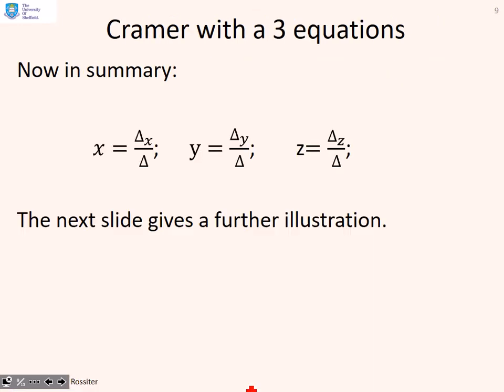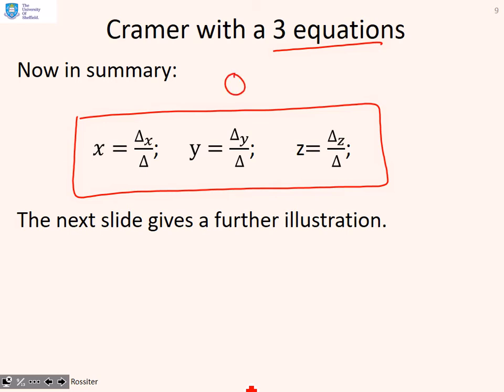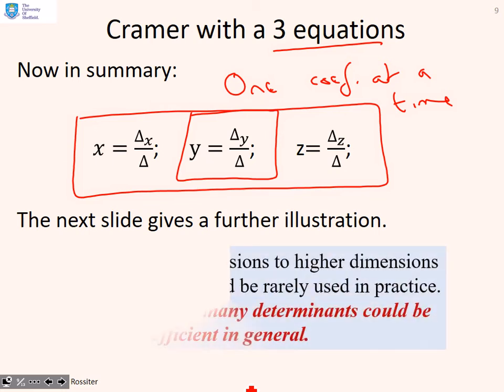In summary, if you have three equations, then x is delta_x over delta, y is delta_y over delta, z is delta_z over delta. The key point to notice is you can solve for one coefficient at a time. If you only wanted y, all you need to do is calculate delta and delta_y. So that's just two determinants, and we know we can solve determinants fairly efficiently. This is where Cramer's rule can be very useful. If you just want one coefficient, you can do it very quickly.